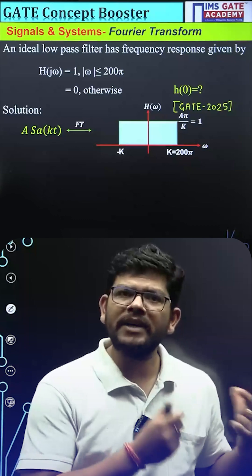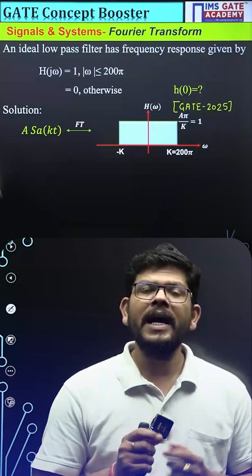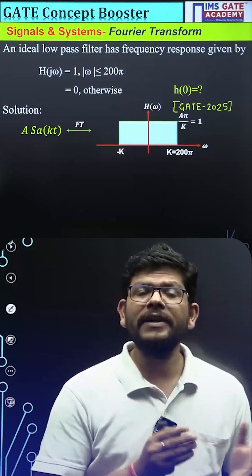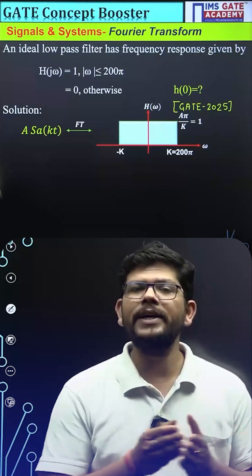If we compare it with the given transform, we have been given the magnitude 1. So A π over k will be 1 and the value of k is given 200π because that value 1 is from minus 200π to plus 200π.